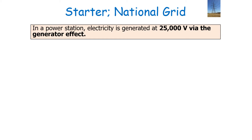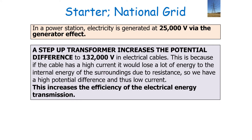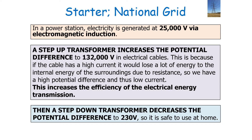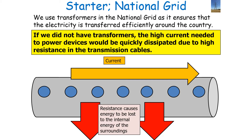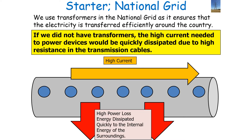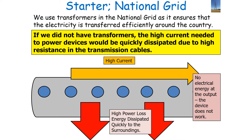In the national grid, electricity is generated at 25,000 volts at the power station via the generator effect. A step-up transformer increases the potential difference to 132,000 volts in the electrical cables, because a high current would lose a lot of energy to the surroundings due to resistance. So you have a high potential difference and therefore low current, which increases the efficiency of electrical energy transmission. Then a step-down transformer decreases the potential difference to 230 volts so it's safe to use at home. Without transformers, the high current needed to power devices would be quickly dissipated due to high resistance in transmission cables, so there would be no electrical energy at the output.